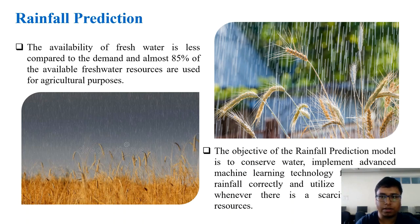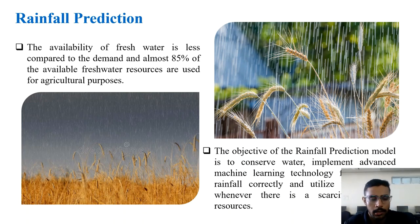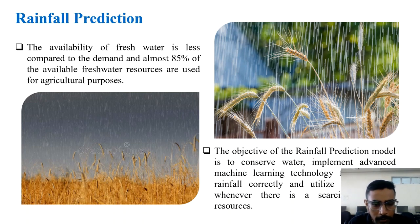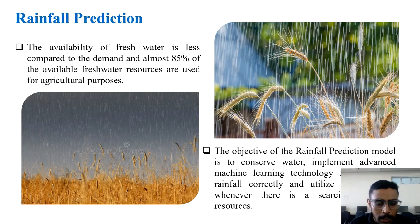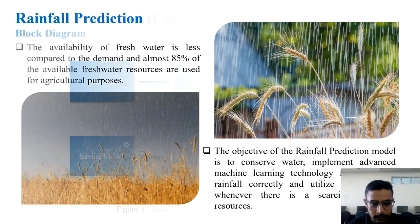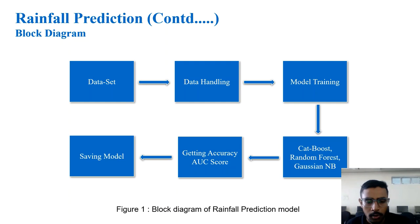Now coming to rainfall prediction. As we all know, availability of fresh water is less than the demand, and almost 85% of available fresh water resources are used for agricultural purposes. Our main motivation is to develop a rainfall prediction model that will help predict whether it will rain on a given date, paving the way for an environmentally friendly agricultural system.